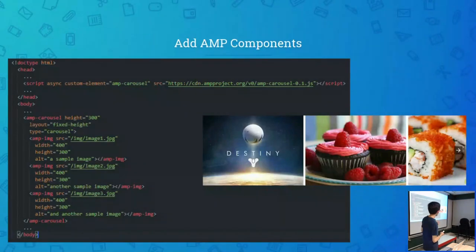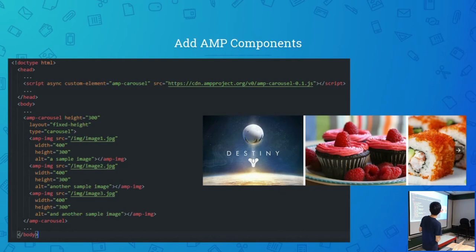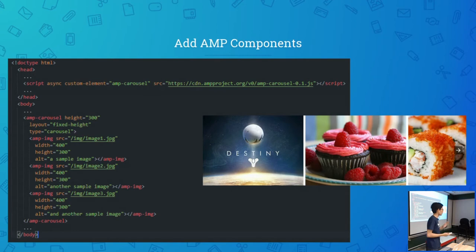Next is the JavaScript, which is the AMP components. One example I have here is the carousel. What you have to do is add the JavaScript in the head, and after that you can just use the component in the HTML. It's really quite simple — it's like using Bootstrap or any web component. You just have to restyle it to suit your needs and you're good to go.